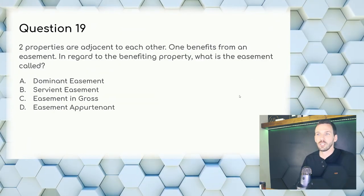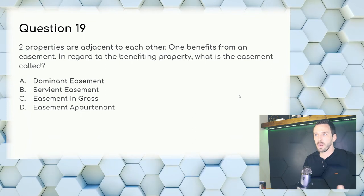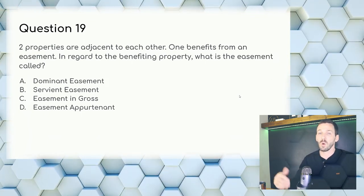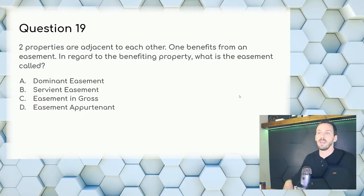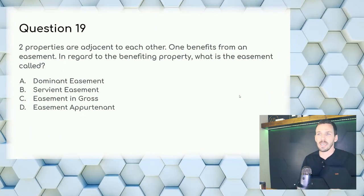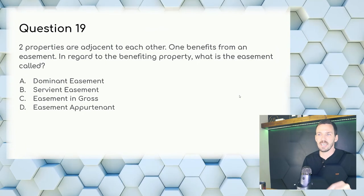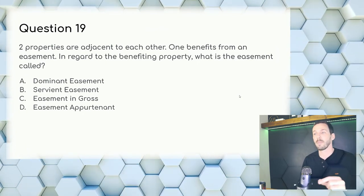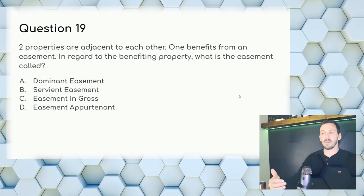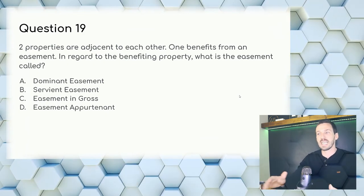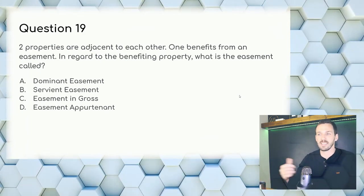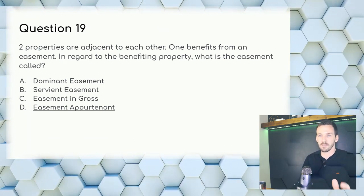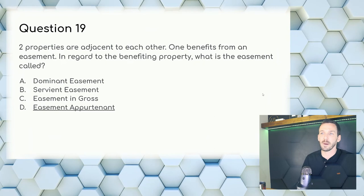Question 19: Two properties are adjacent; one benefits from an easement. What is the easement called regarding the benefiting property? The dominant tenement is the one benefiting — they need the easement appurtenant to get to their home, which dominates over the servient tenement. Answer: D, easement appurtenant.